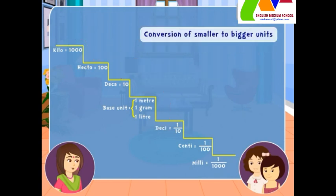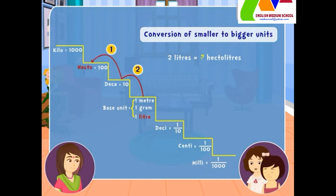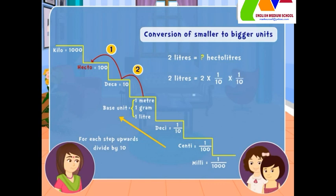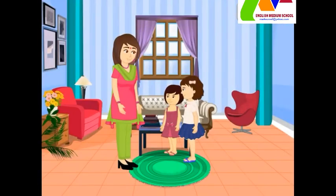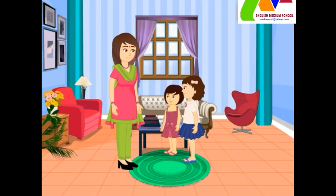Similarly, we can convert smaller units to bigger units. How about converting 2 liters to hectoliters? To convert liters into hectoliters, we move two steps upwards. And as we move upwards, we divide by 10, so we divide 2 by 10 twice. Learning the metric system was fun. All we have to remember is: Katie helps Daisy baking delicious chocolate muffins.